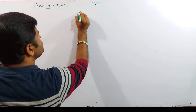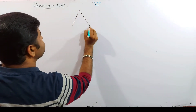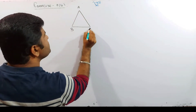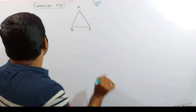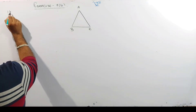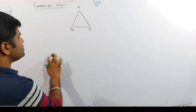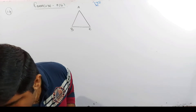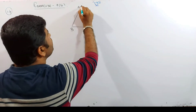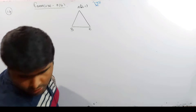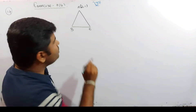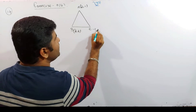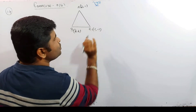Let's draw the triangle first. This is A, B, C. What do we have given? The vertices are: A is (2,1), B is (3,2), and C is (-1,-1). We have the question.